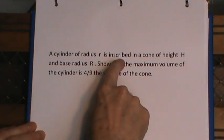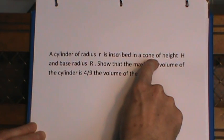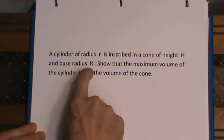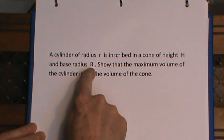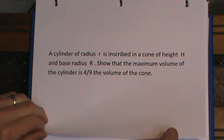What we're doing here is we're inscribing a cylinder inside of a cone with a general height capital H and radius of the base capital R. We want to show that the largest cylinder that we can put in this cone would be four ninths the volume of the cone.